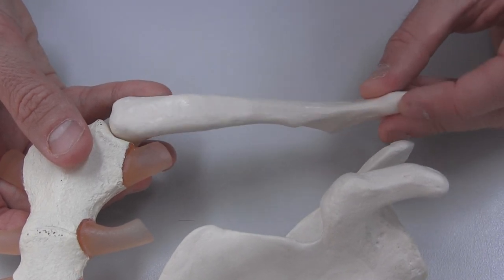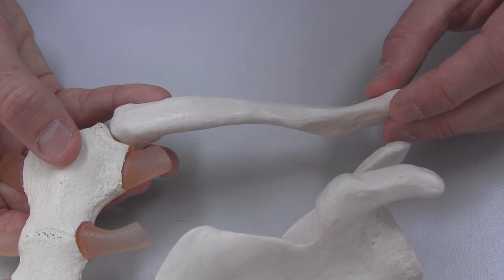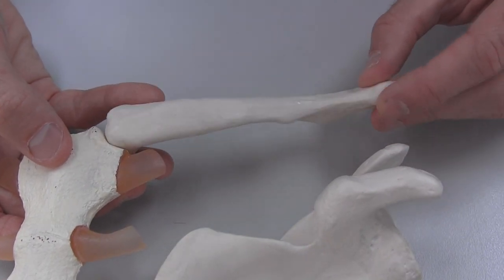So the movements possible at the clavicle, which is a combination of both ends, would be elevation, depression, protraction, retraction, and rotation.